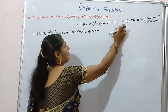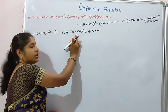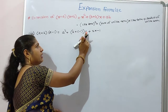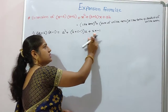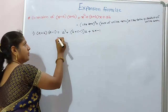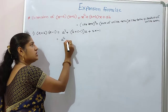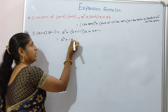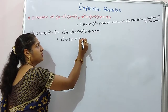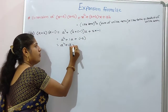So we have: a square, plus the sum of unlike terms 2 and minus 1, multiplied by like term a, plus the product of unlike terms 2 into minus 1. This gives: a square plus 2 minus 1 equals 1, so plus 1 times a, plus 2 into minus 1 equals minus 2. Answer: a square plus a minus 2.